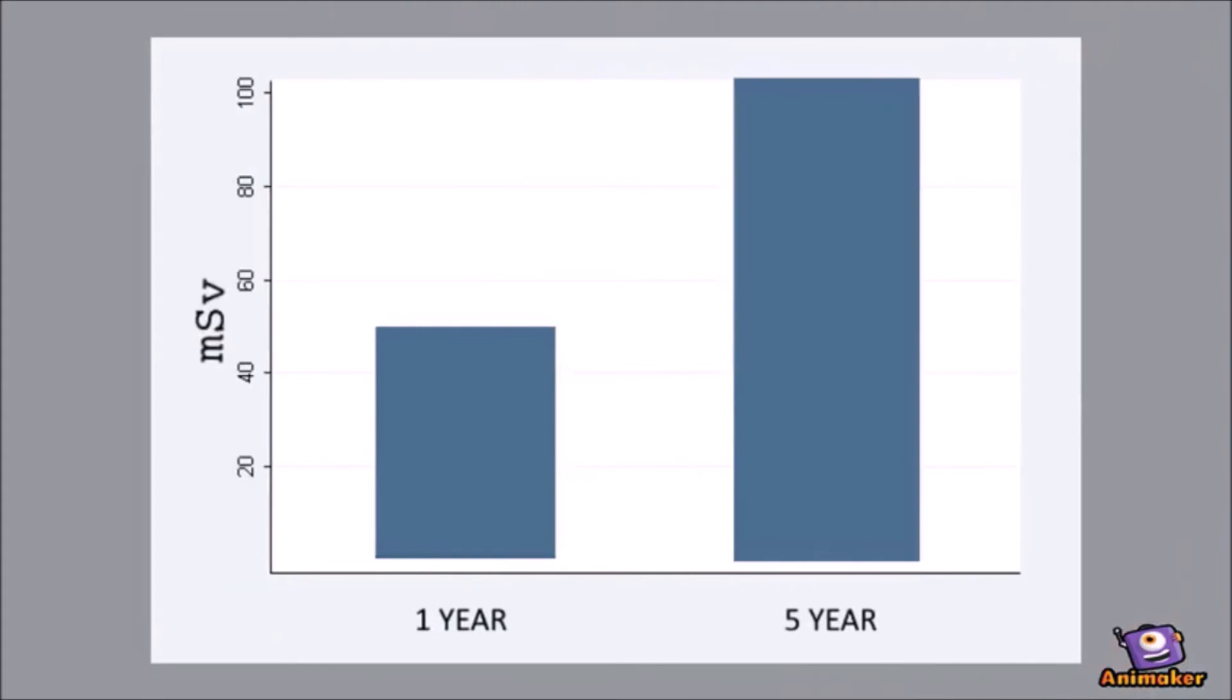In Canada, the Nuclear Safety Commission sets a limit of 50 millisieverts of maximum allowable radiation in one year, and 100 over five years, or an average of 20 millisieverts per year.